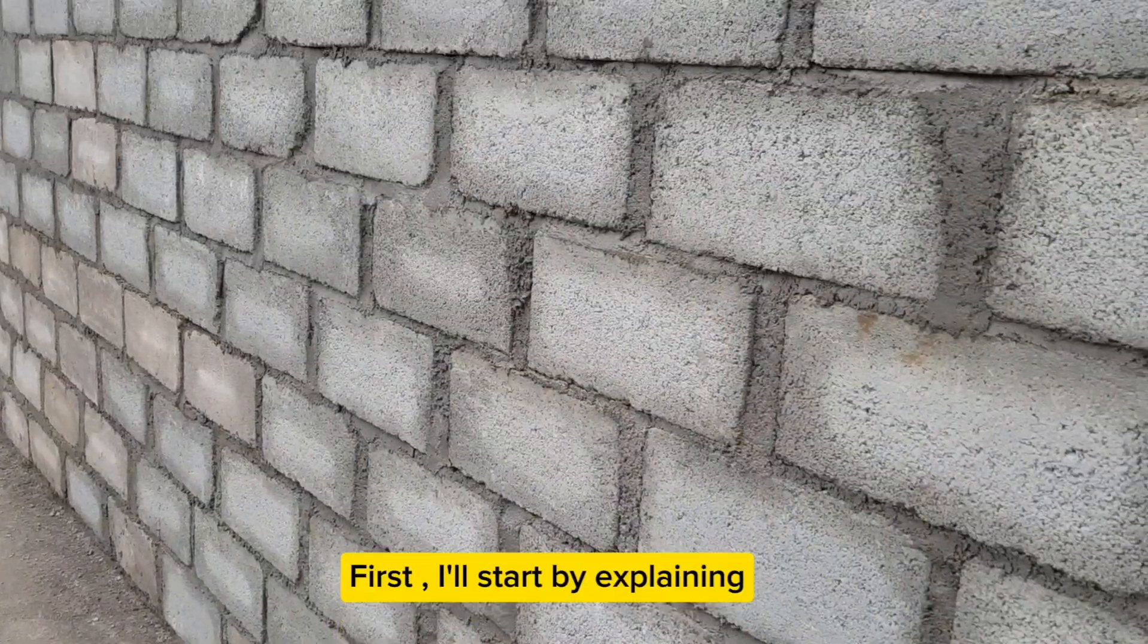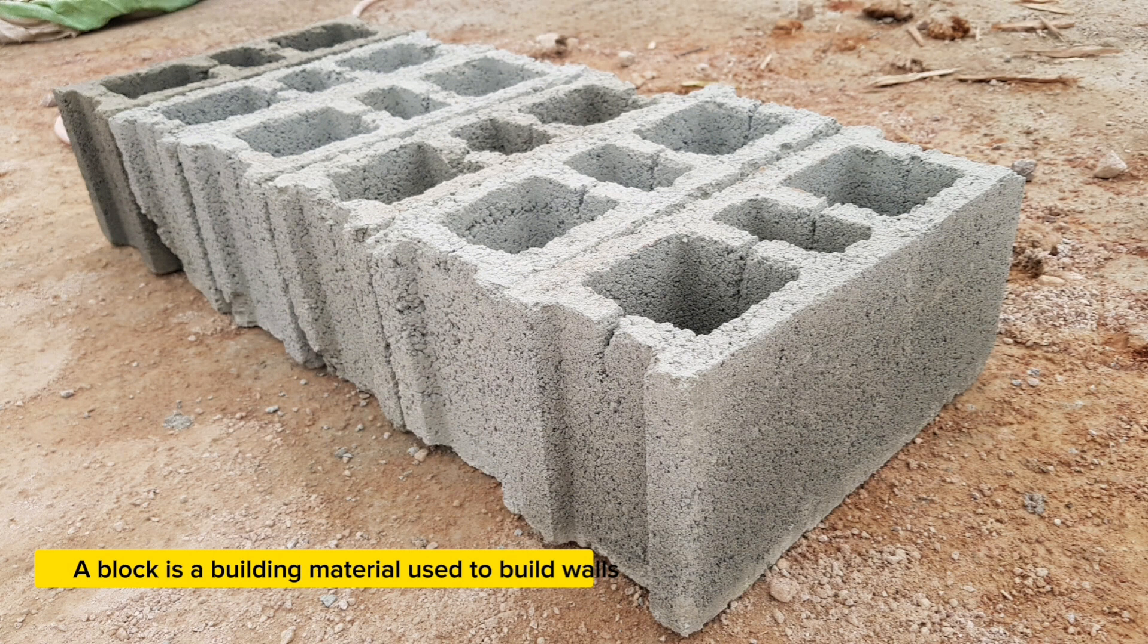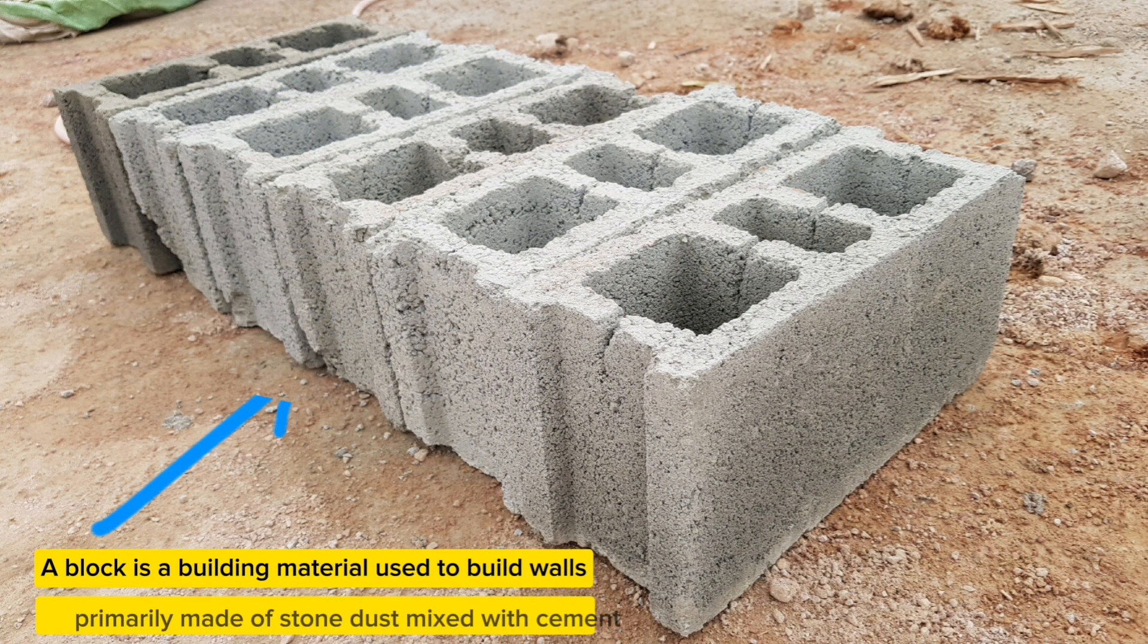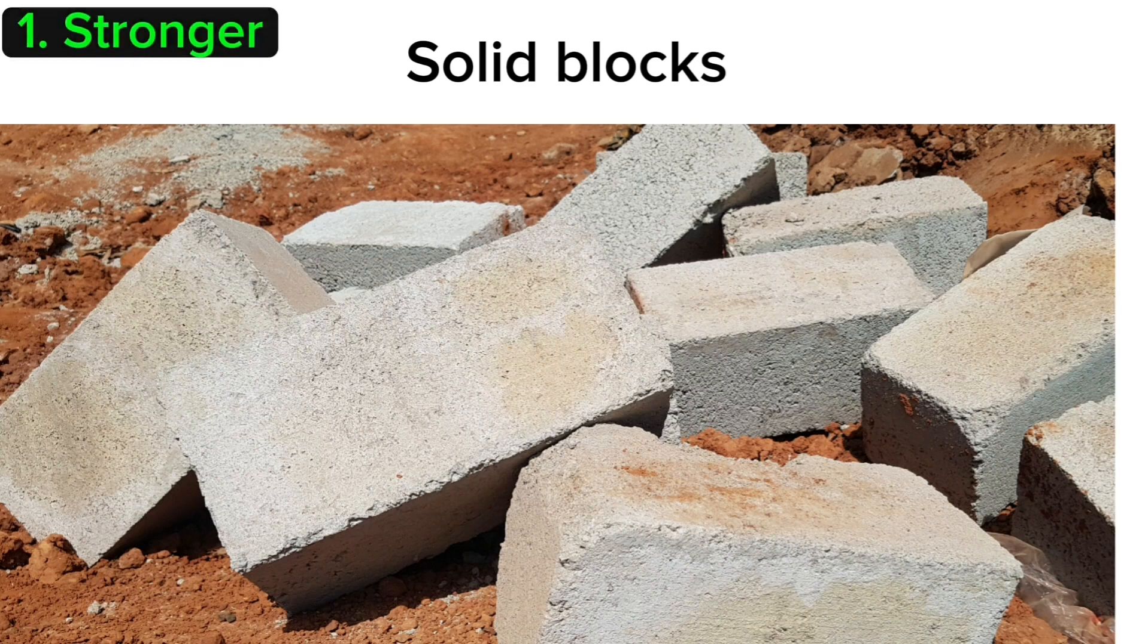I'll start by explaining what a block means. A block is a building material used to build walls, primarily made of stone dust mixed with cement. Concrete blocks are either solid blocks or hollow blocks. Solid blocks are stronger and heavier with no hollow cores running through them, used for load-bearing applications, whereas hollow blocks are lighter with